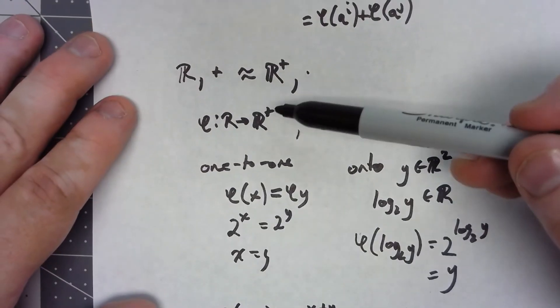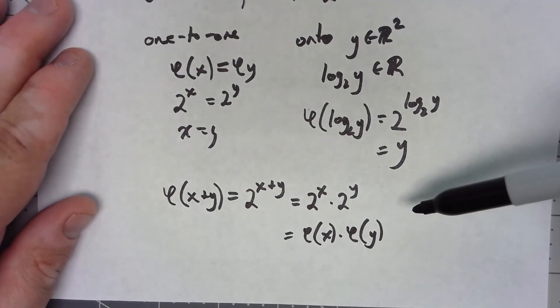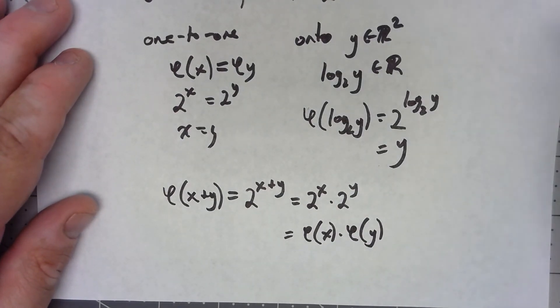So we've defined an operation. It's one to one, onto, and has the homomorphism property. Therefore, those groups are isomorphic.